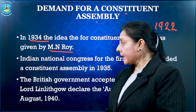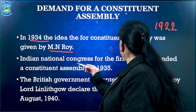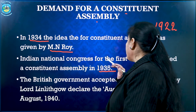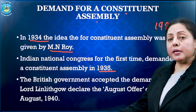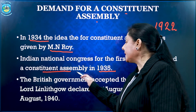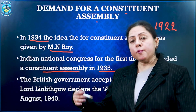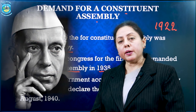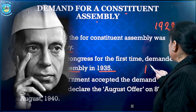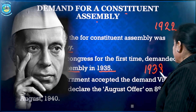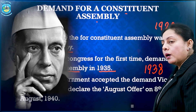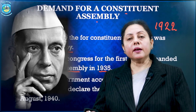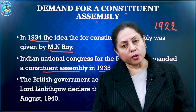But no one heard his demand. Followed by this, in 1935, the Indian National Congress for the first time demanded a constituent assembly. The same voice was raised by Pandit Jawaharlal Nehru in 1938, that India will have its own constituent assembly and they will be drafting their own rules.